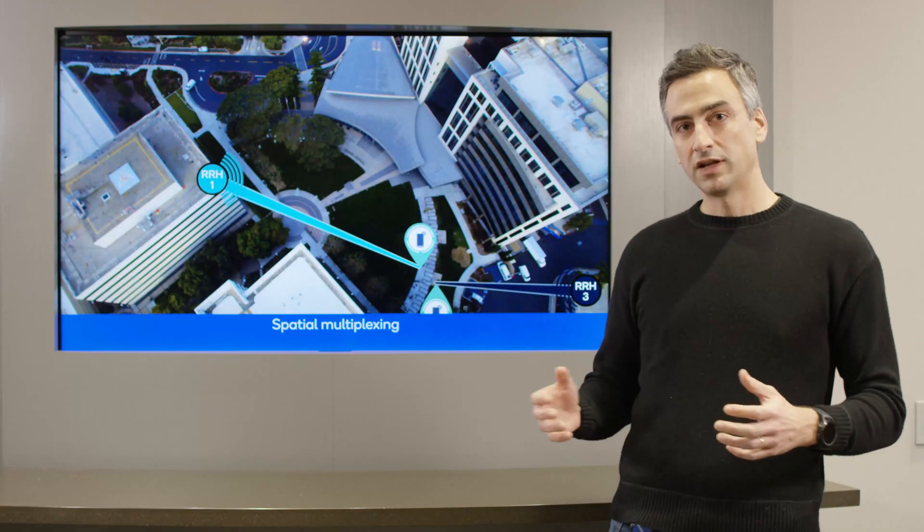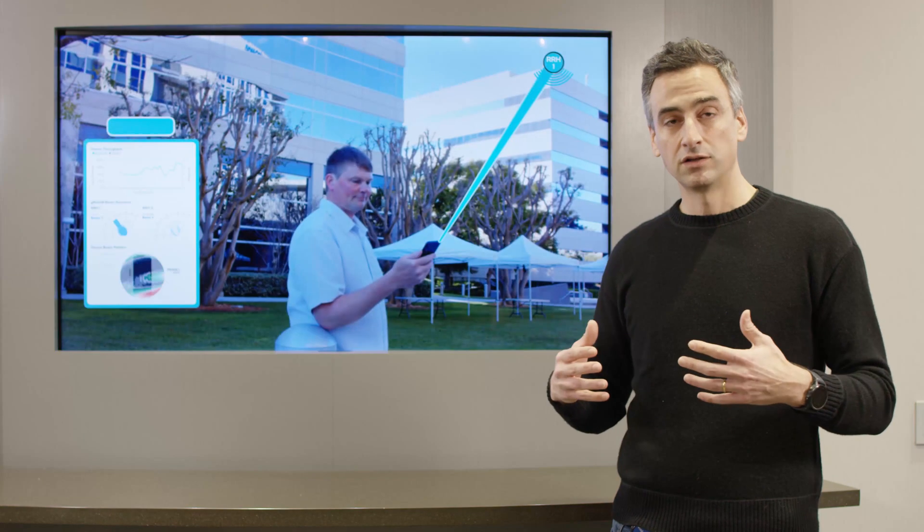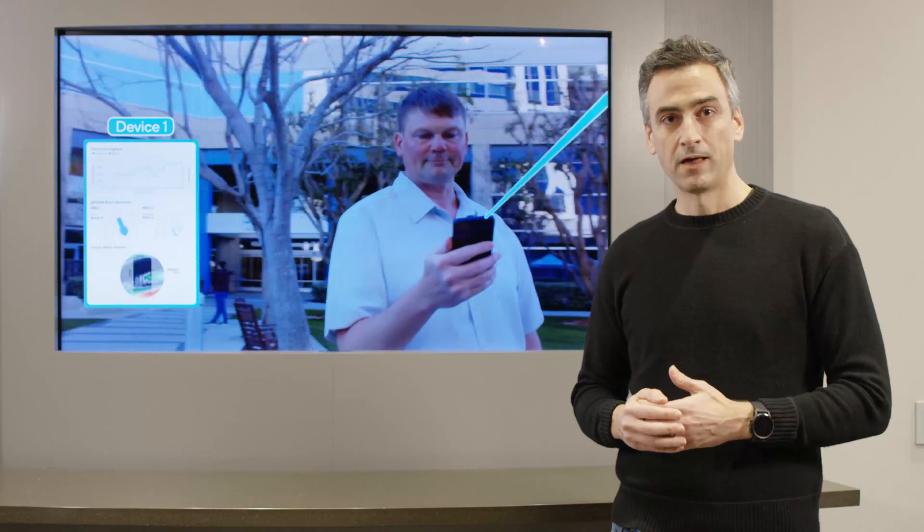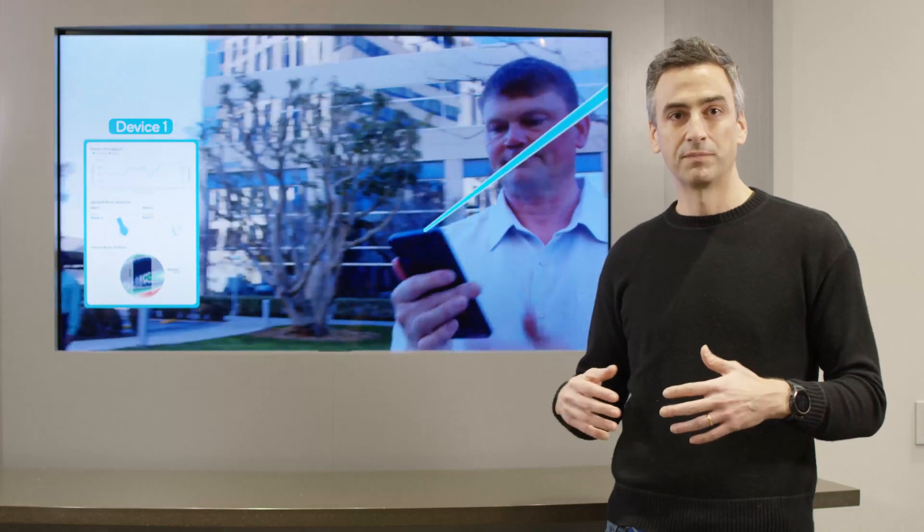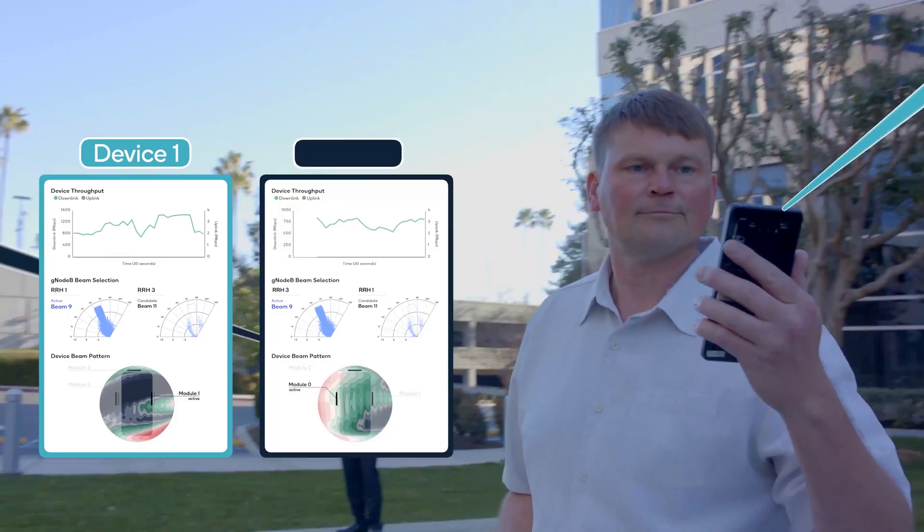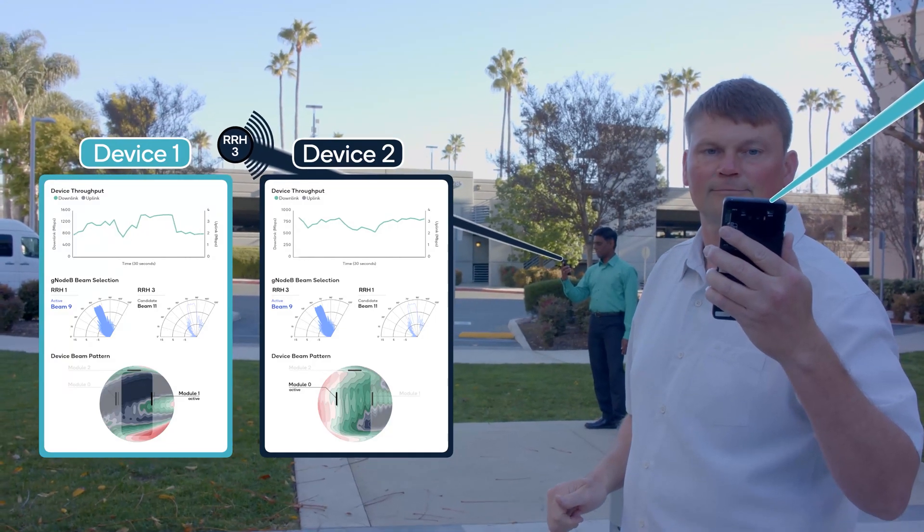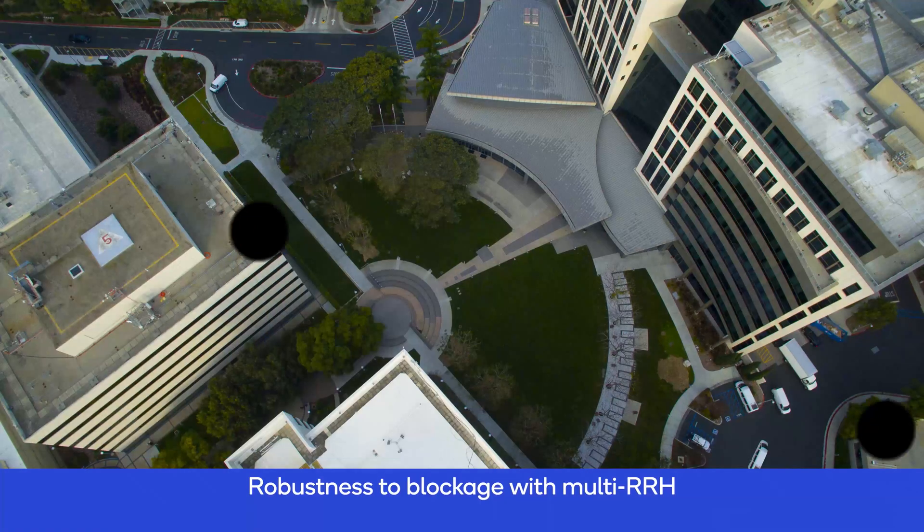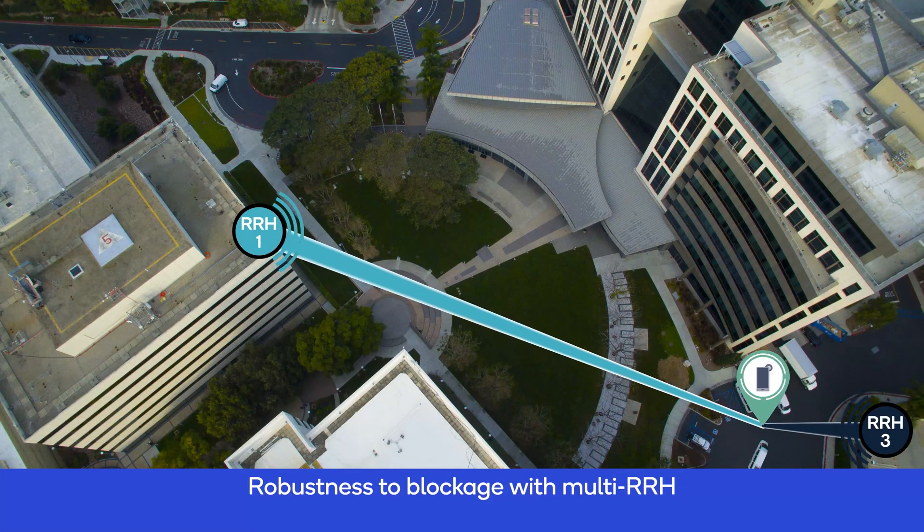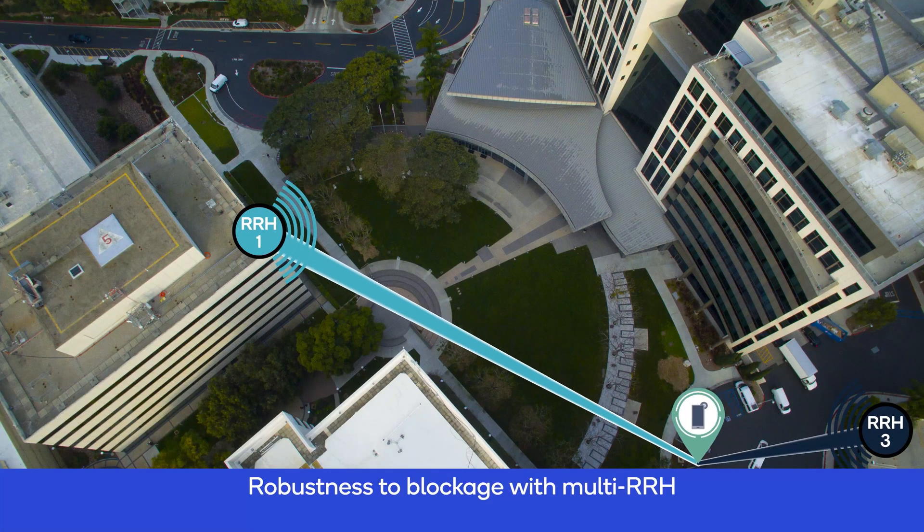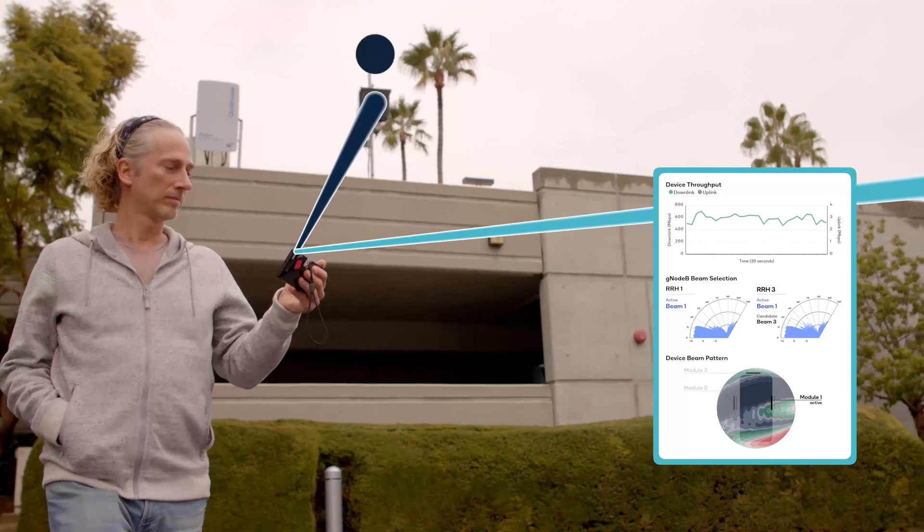With distributed remote radio heads, the gNodeB has the ability to use multiple remote radio heads for different users or for a single user. We'll start off by showing the capability of spatial multiplexing - using two remote radio heads to support two relatively close users without any interference to each other. We can also use these multiple remote radio heads to provide extra robustness as well as coverage for a single user.